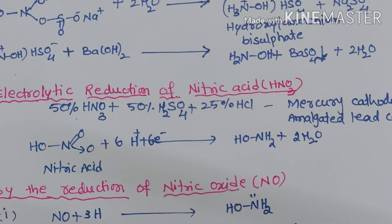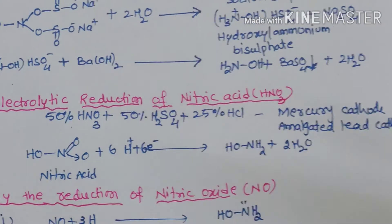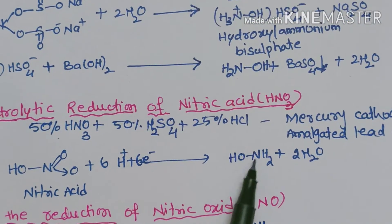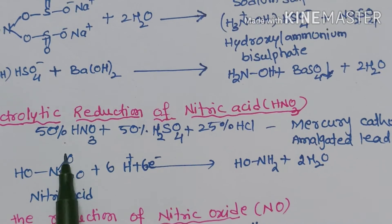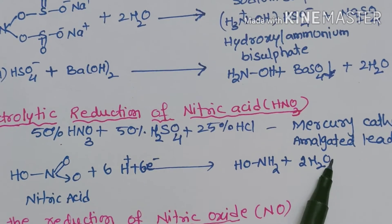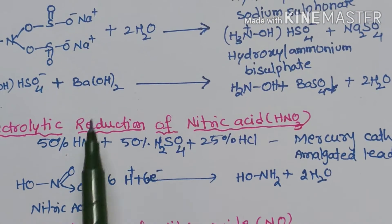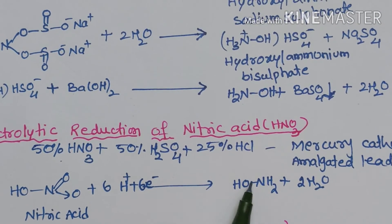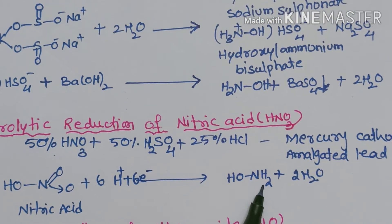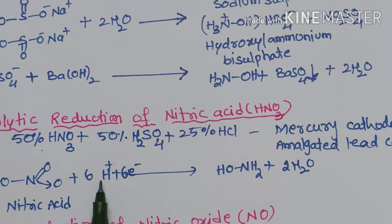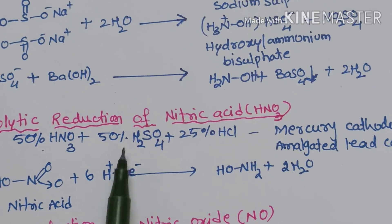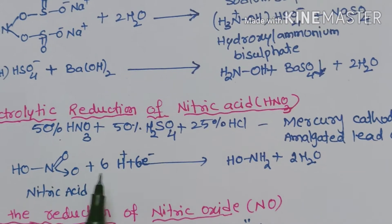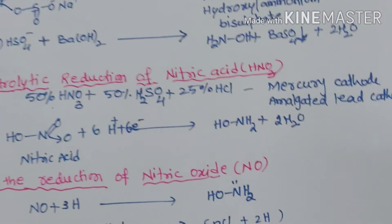This equation is straightforward to balance. In nitric acid we have three oxygen atoms and in hydroxylamine we have only one oxygen atom, so two oxygen atoms are removed in the form of water. To remove two oxygen atoms we require four hydrogen atoms, and in hydroxylamine two more hydrogens must be added, so we add six H⁺ ions. To balance the charges we write six electrons, and the equation is easily balanced.